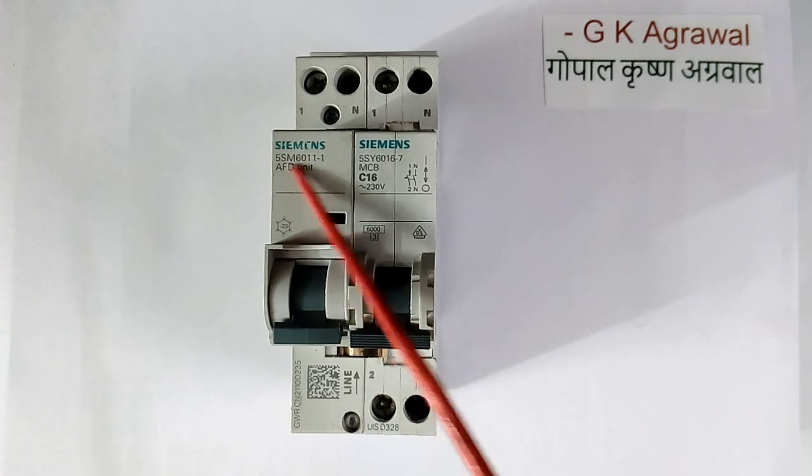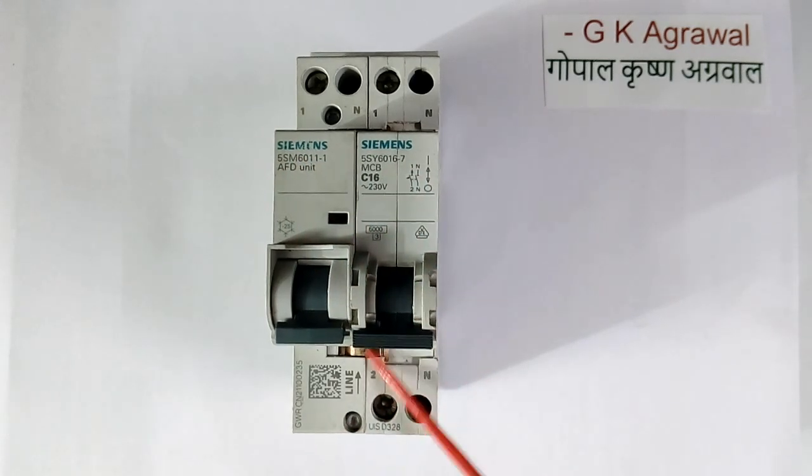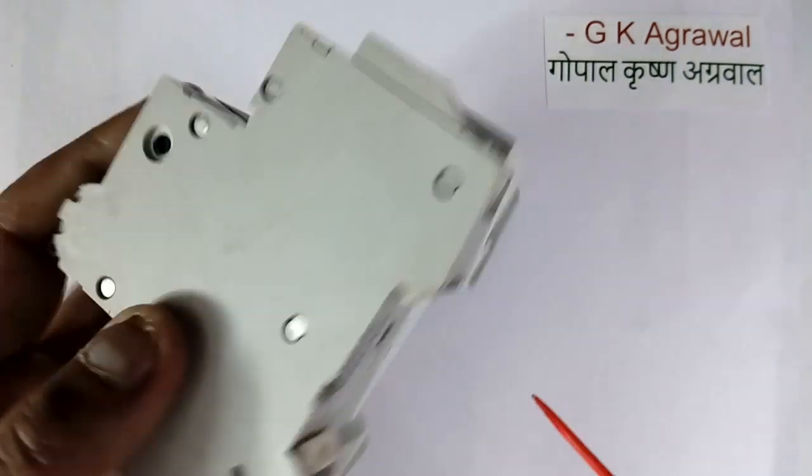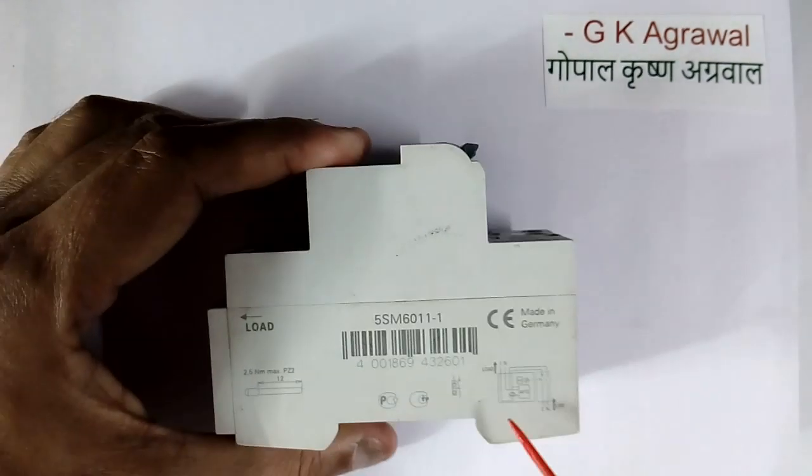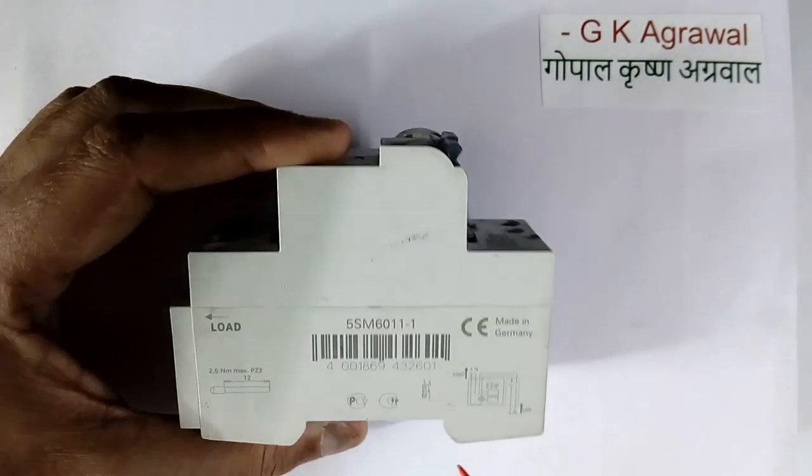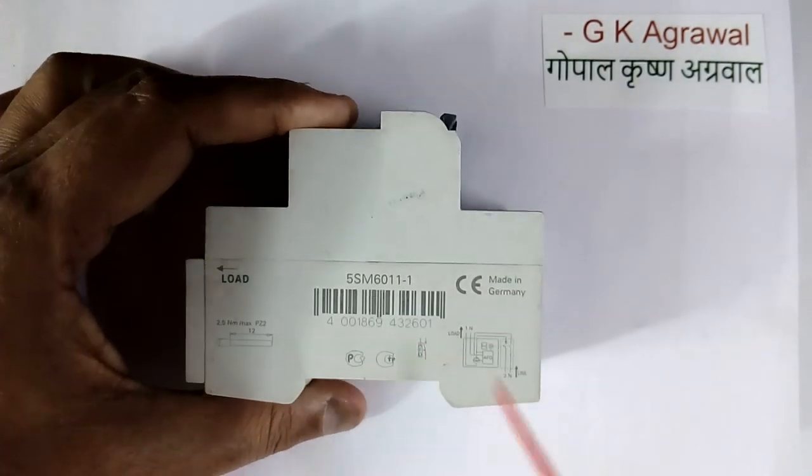See here, type number is written here. This is 16 ampere type. This is line. This is back side. Here small circuit diagram is shown. This load is written. This is imported. Made in Germany.